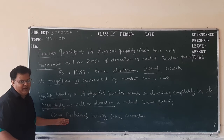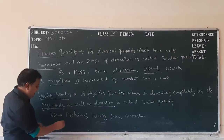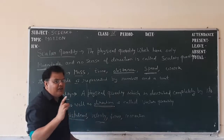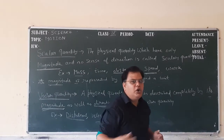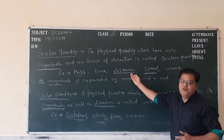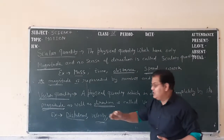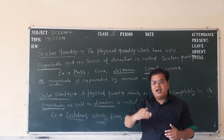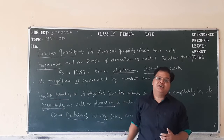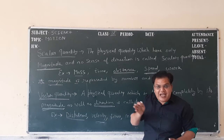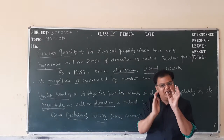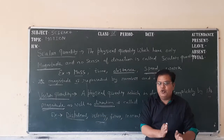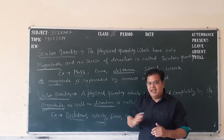Example: displacement. There is a little confusion about displacement and distance. Distance means 4 kilometers — it gives only magnitude. But displacement means 4 kilometers in a particular direction. It means it gives you direction also. Distance gives you only magnitude, but displacement gives you magnitude and direction.